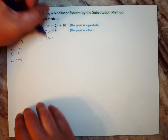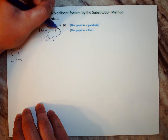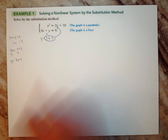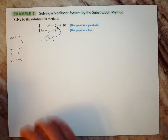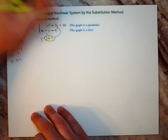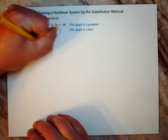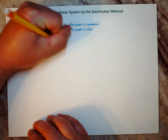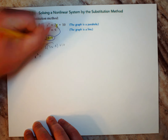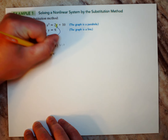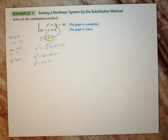Now take this equation — where it says y equals — and put it into the y in the first equation. So where that y is, substitute y = 3x − 9. You get x² = 2(3x − 9) + 10, which gives x² = 6x − 18 + 10, so x² = 6x − 8. Now we just have a quadratic.